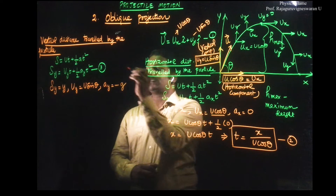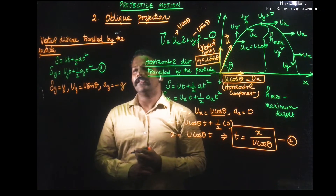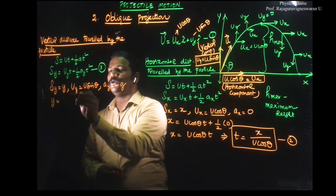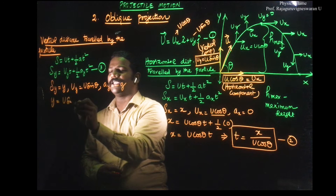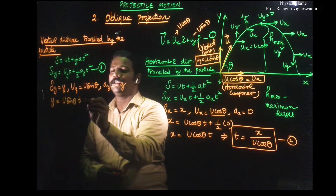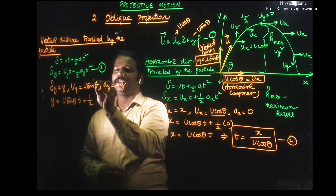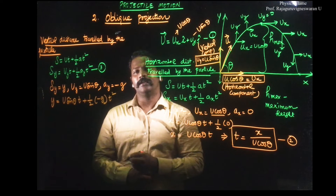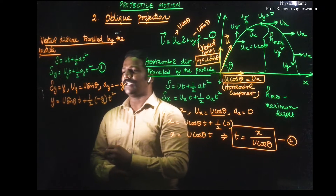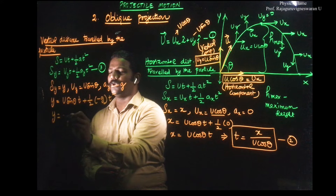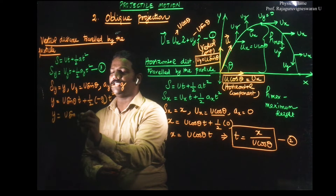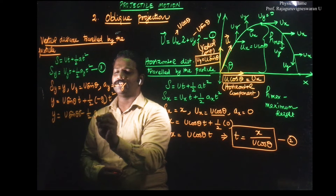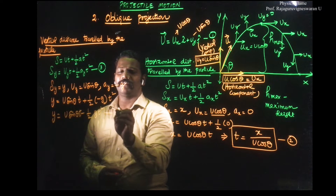This is what we need to substitute in equation 3. Therefore, y is equal to u_y, which is u sinθ. So, y = u sinθ · t − ½g t².